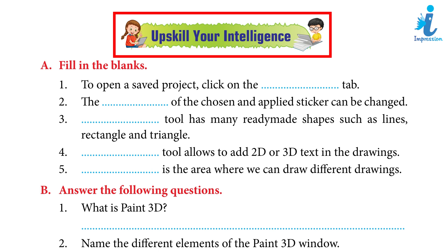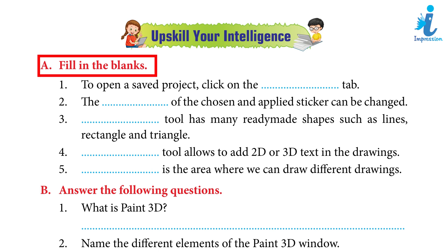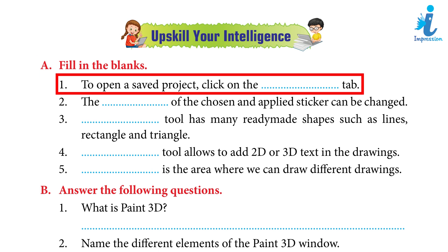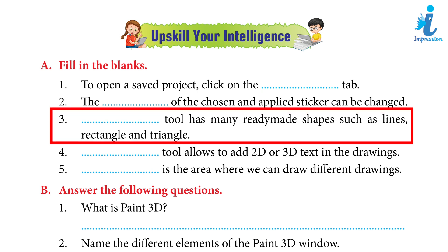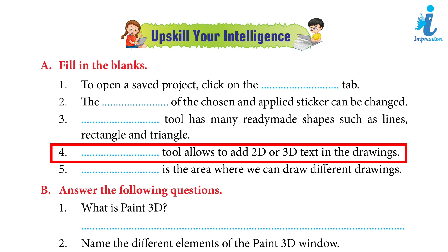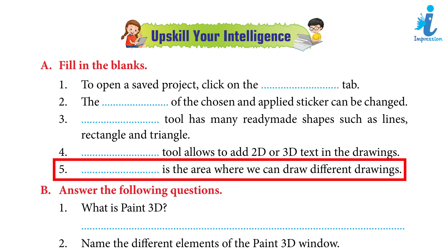Upscale your intelligence — Fill in the blanks. 1. To open a saved project, click on the — Answer: Menu. 2. The — of the chosen and applied stickers can be changed. Answer: Opacity. 3. — tool has many ready-made shapes such as lines, rectangles, and triangle. Answer: 2D Shapes. 4. — tool allows to add 2D or 3D text in the drawings. Answer: Text tool. 5. — is the area where we can draw different drawings. Answer: Canvas (3D Paint window).